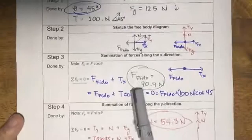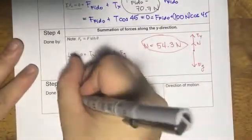Okay, so what are we being asked to solve for? We are being asked to solve for the force exerted by Fido on Matt, and we solved that over here: F Fido is equal to